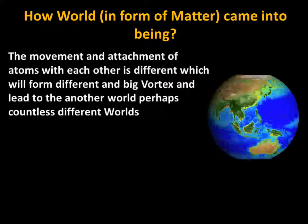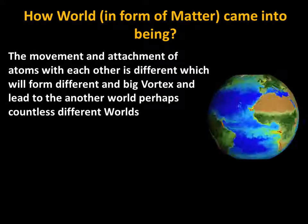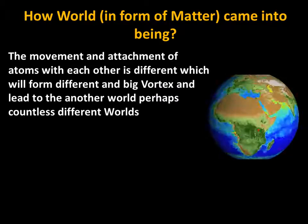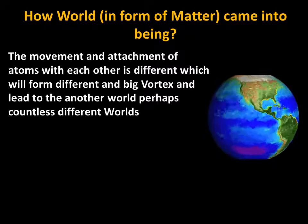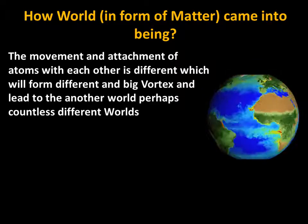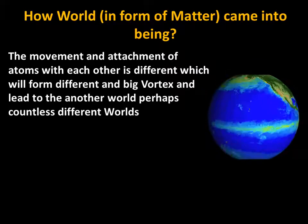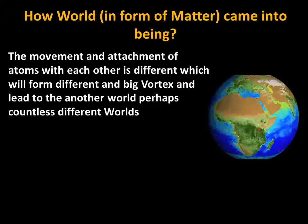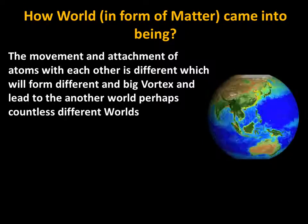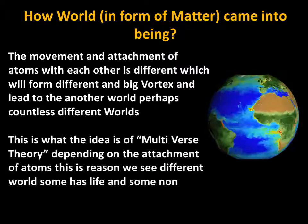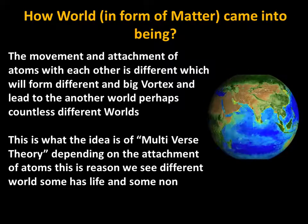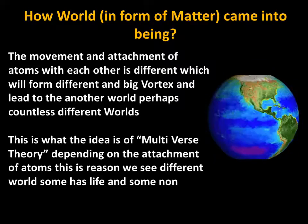According to Democritus, the movement and attachment of atoms with each other in different ways forms different large vortices, leading to perhaps countless different types of worlds. This idea — that different attachments and movements of atoms can cause different universes — is known as the multiverse theory, which depends on the attachment of atoms and can cause countless different worlds.